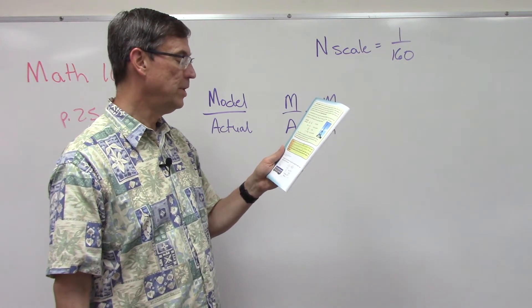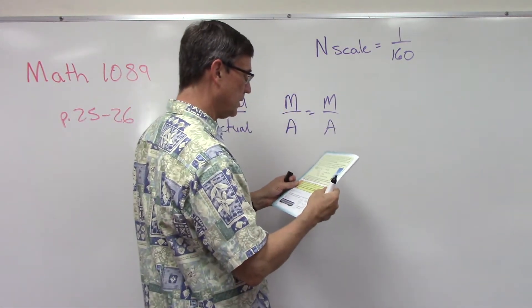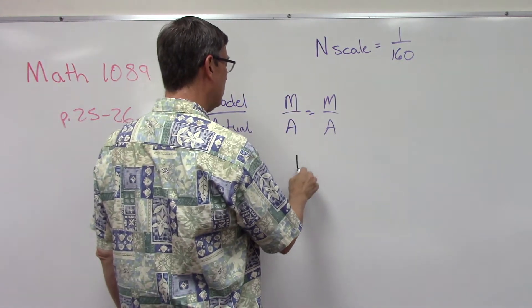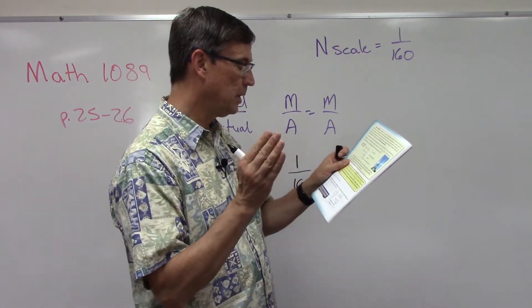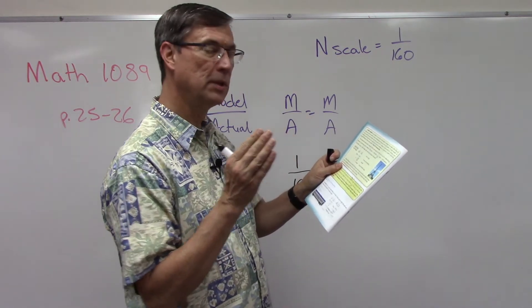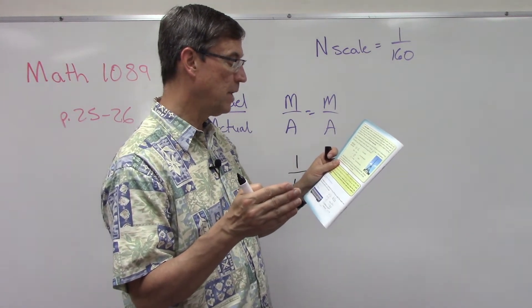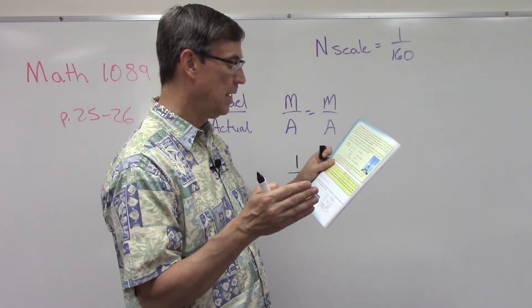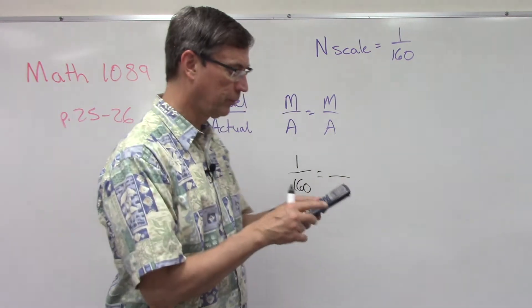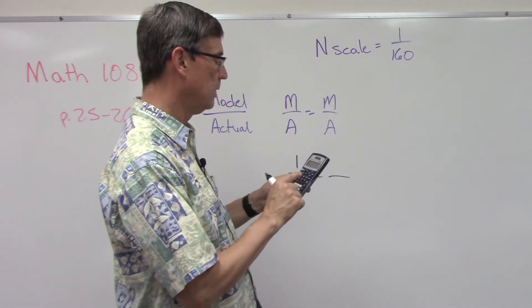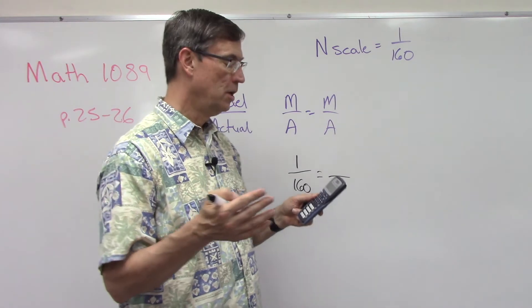So we're going to use the model 1 over 160 equals - now we have to think about, are we talking about the length on the model or the length of the actual thing? We have the actual thing, so that's where the 43 and a half feet would come in. What I'm going to do - I think this is easier - let's take the 43.5, because six inches is half a foot, so 43.5 feet times 12 inches.